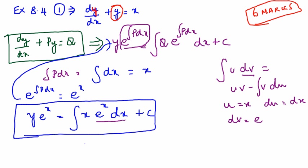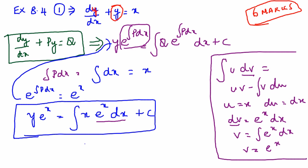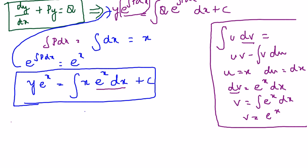So if I have dv and I have to find v, then I'll have to integrate e^x dx and integration of this is going to be nothing but v equals e^x. So just write it down on the side so that you can refer to it.